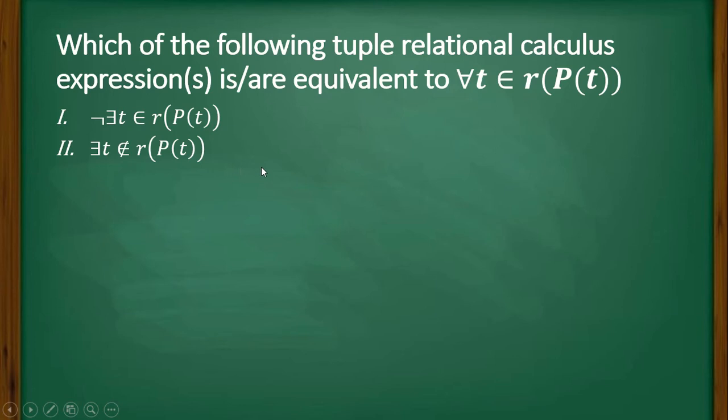to r, predicate P(t). Third is option III: There does not exist t belongs to r, not predicate P(t).